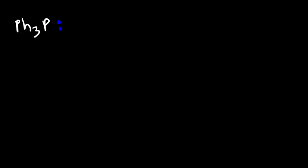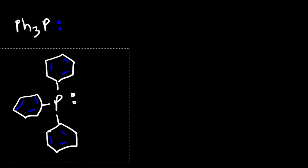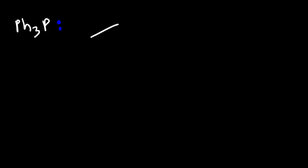Now let's go over the mechanism for the Wittig reaction. We start with triphenylphosphine — a phosphorus atom attached to three benzene rings (Ph₃P), which has a lone pair. We react it with an alkyl halide via an SN2 reaction. You want to use methyl bromide or a primary alkyl halide, because secondary halides could work but need care, and tertiary halides don't work well for SN2. Ideally, use methyl or primary halides.